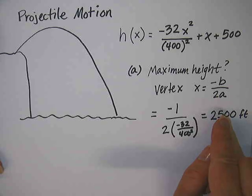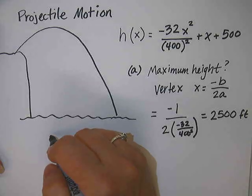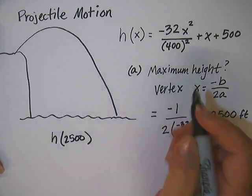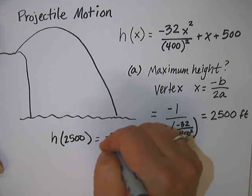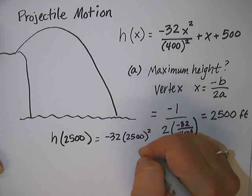But the question is, what is the maximum height? So that's not our answer. The answer can be found by plugging that into the original problem. So we're now going to find the height of 2,500.